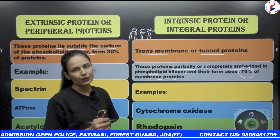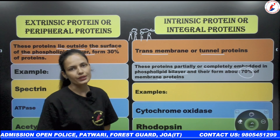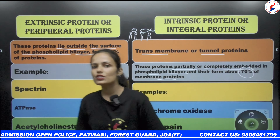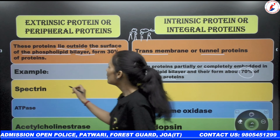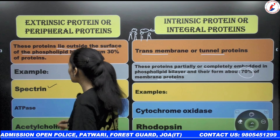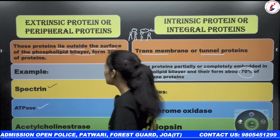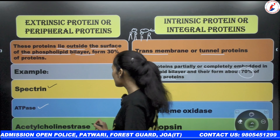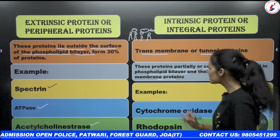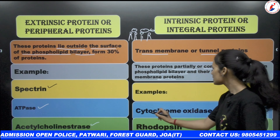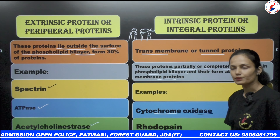Examples of extrinsic proteins include spectrin, ATPase, and acetylcholine. Examples of intrinsic proteins include cytochrome oxidase and rhodopsin.